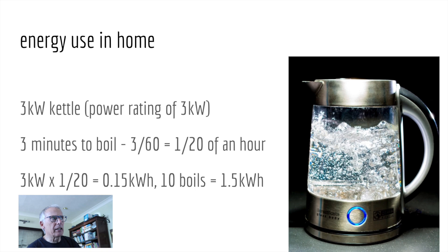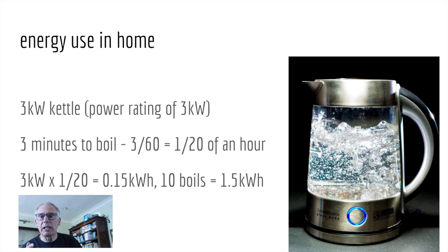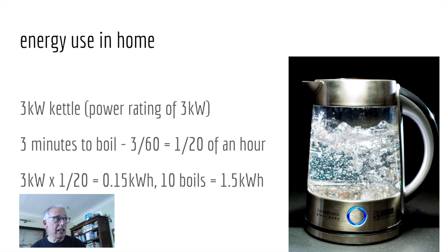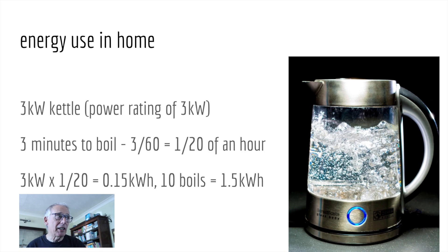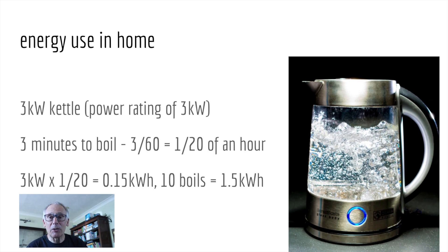We can also look at an electrical kettle. Kettles have a much higher power rating, typically anything between two and three kilowatts. I timed the kettle in the kitchen here — it took three minutes to boil. Three minutes divided by 60 is one-twentieth of an hour. Three kilowatts times one-twentieth is 0.15 kilowatt-hours. If you do 10 boils, that's 1.5 kilowatt-hours.